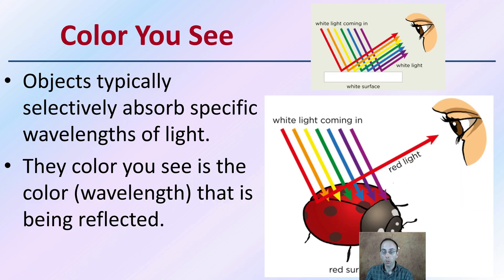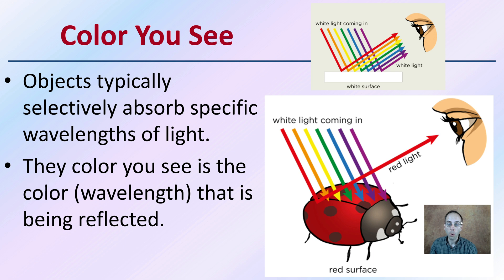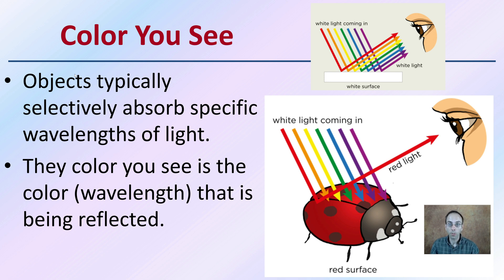The color that you see — the color that you're interpreting — if we're looking at this ladybug here, we're seeing a red color. White light is coming in, and this bug is absorbing many of the colors. However, the red wavelength light is being reflected. Objects typically selectively absorb specific wavelengths of light.